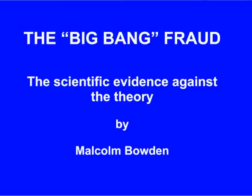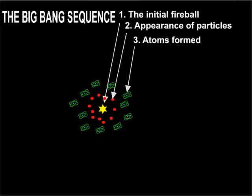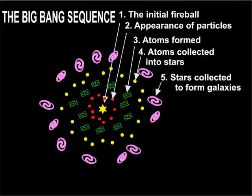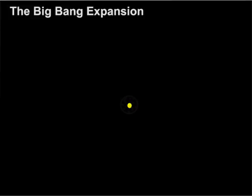The Big Bang Fraud: The Scientific Evidence Against the Theory, by Malcolm Bowden. The Big Bang Theory is the proposal that many billions of years ago a tiny quantity of very dense matter exploded. As it enlarged and cooled, matter eventually condensed out, then collected to form atoms. These formed into stars, which collected to form massive groups of stars called galaxies. These galaxies then collected together to form superclusters of galaxies. As the universe continued to expand, the galaxies moved further away from each other.